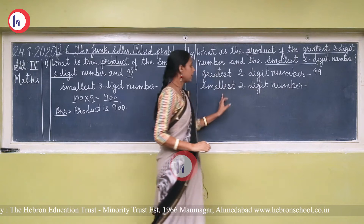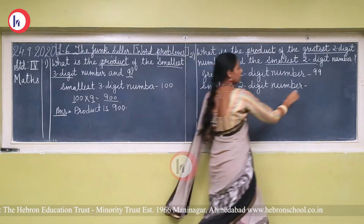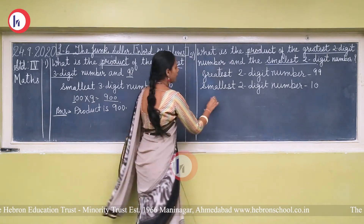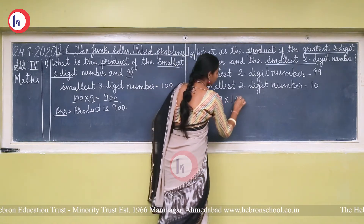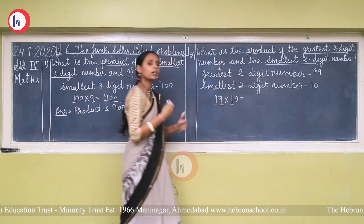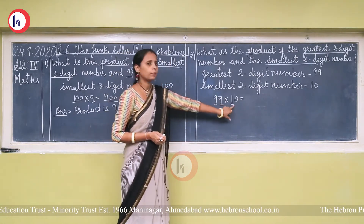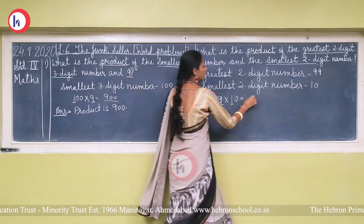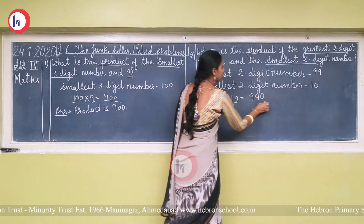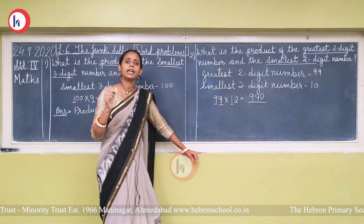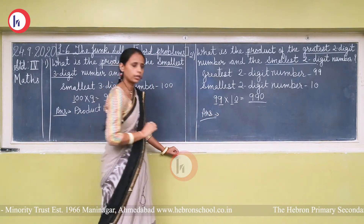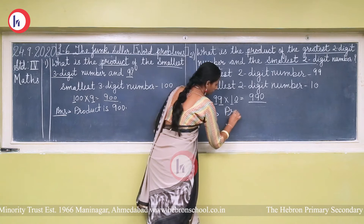The smallest two-digit number is 10. So 99 multiplied by 10 — mentally, 99 ones are 99, and one zero follows, so the answer is 990. The product is nine hundred and ninety.